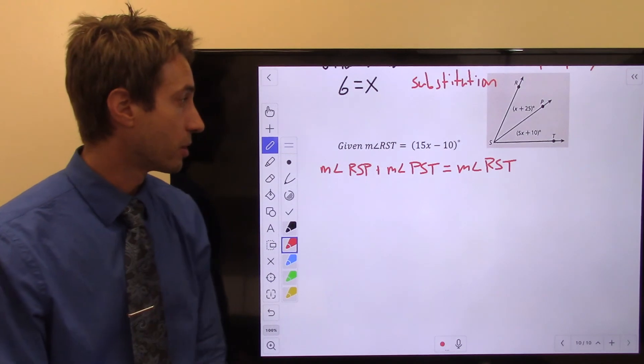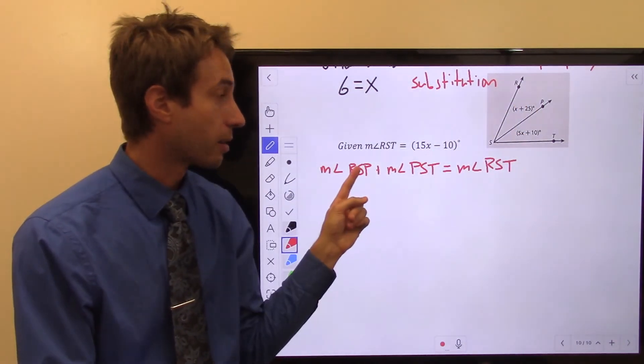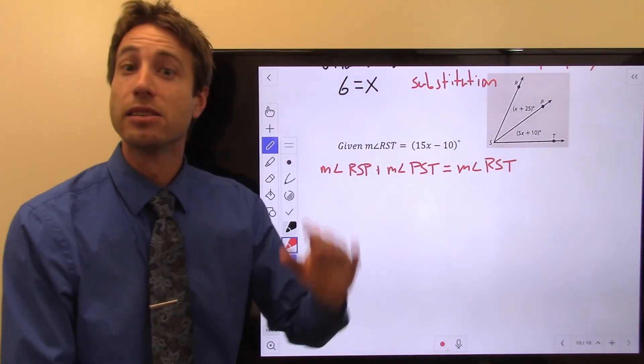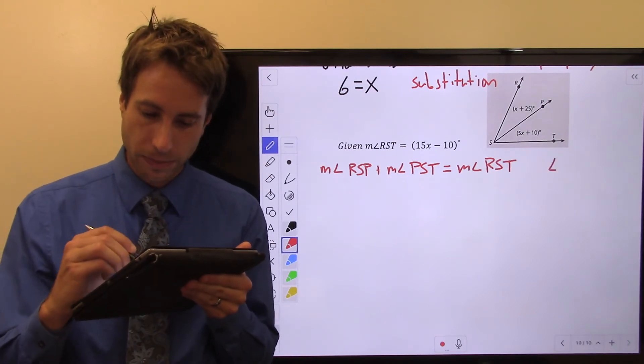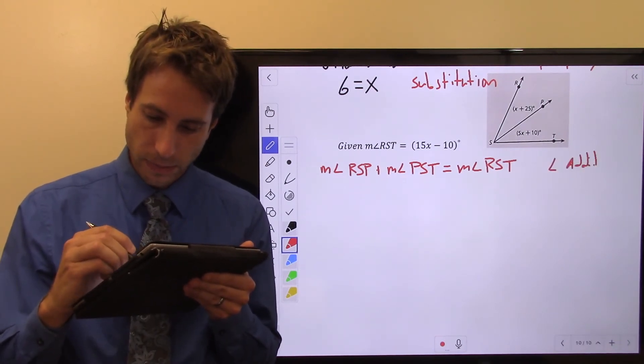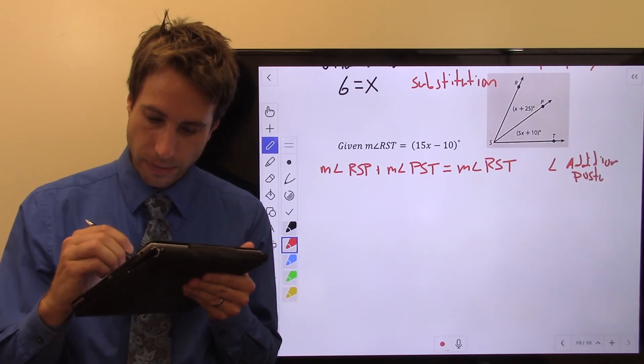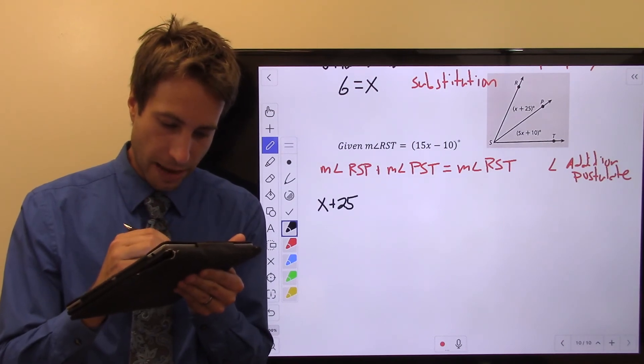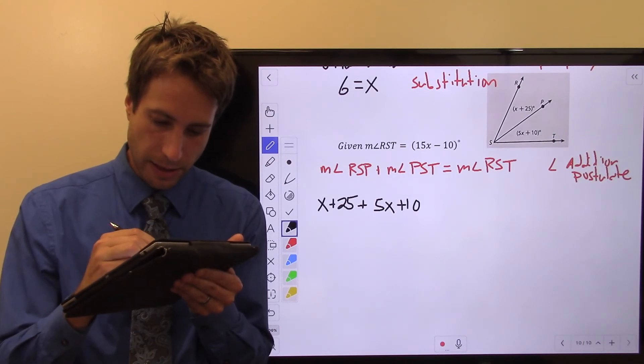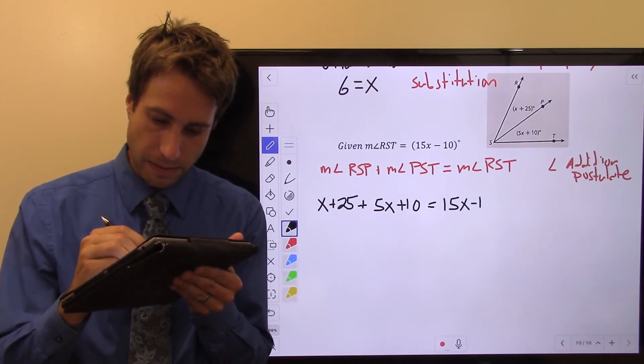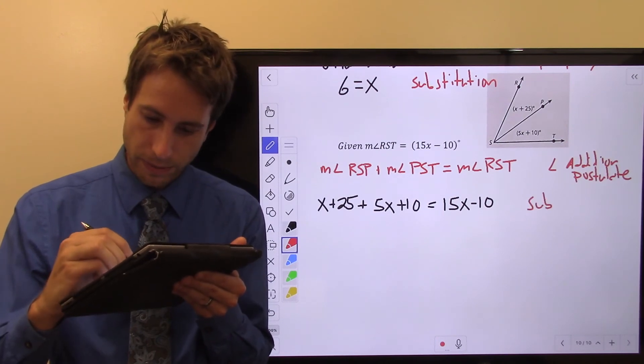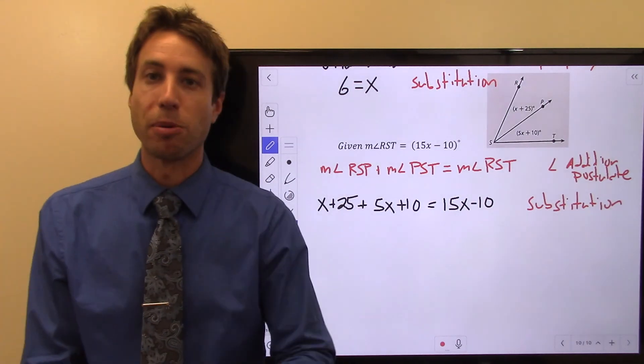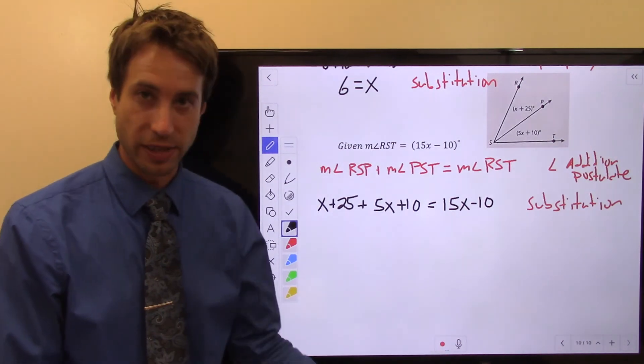Now, what do I know? Well, I know a bunch of stuff. I know RSP, so I'll plug that in. Substitution. I know PST. Substitution. I even know RST. Substitution. So, this is the angle addition postulate. And we substitute. X plus 25 plus 5X plus 10 is equal to 15X minus 10. That's substitution. And from there, properties of equality to solve this guy for X.